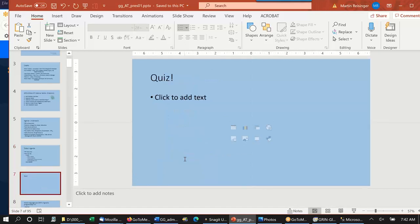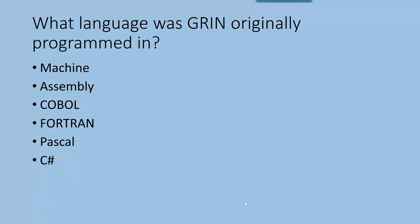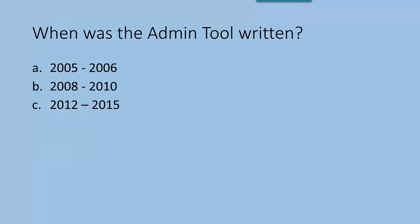I always like to start with a quiz — I thought of this as a joke. As you know, Green Global has a legacy that goes back to 1983. The answer is Fortran. Today it's not written in Fortran; most of you know it's written in C Sharp and so on. The admin tool was written in the period of 2008–2010, so we're celebrating its 10th anniversary this year.